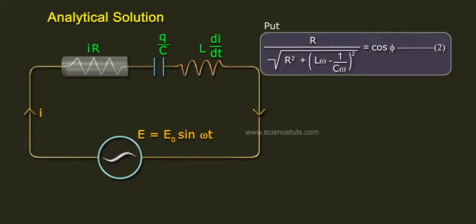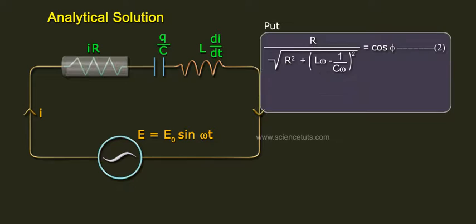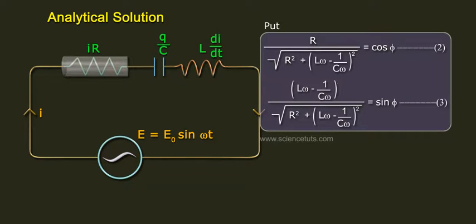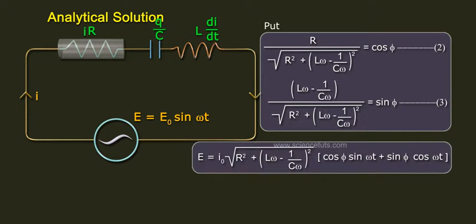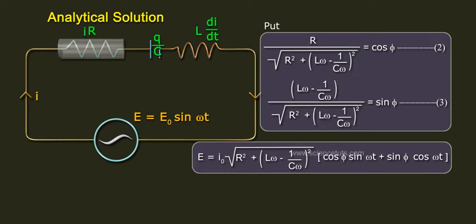Let R/√(R² + (Lω − 1/Cω)²) = cos φ (Equation 2) and (Lω − 1/Cω)/√(R² + (Lω − 1/Cω)²) = sin φ. Then E = I0·√(R² + (Lω − 1/Cω)²)·[cos φ·sin(ωt) + sin φ·cos(ωt)], which gives E = I0·√(R² + (Lω − 1/Cω)²)·sin(ωt + φ).